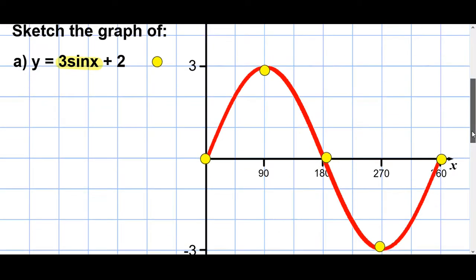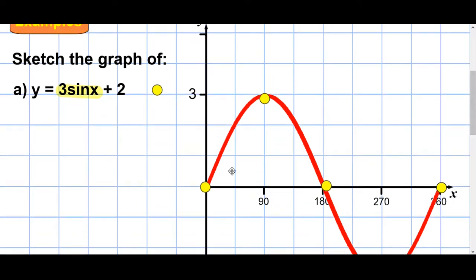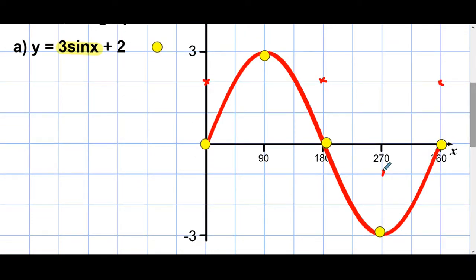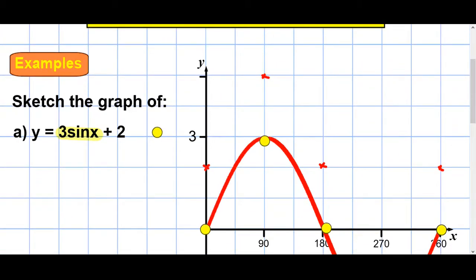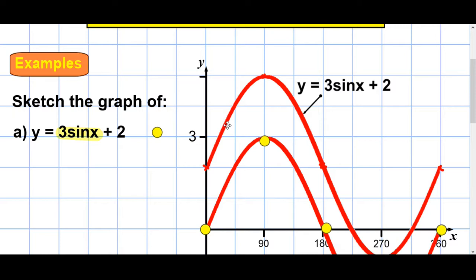Now each of these five points, to draw 3 sin x plus 2, needs to be moved up two places. Mark them in on your jotter — each one shifted up two positions. Then draw a smooth curve through the new points. There's your new graph: y equals 3 sin x plus 2.